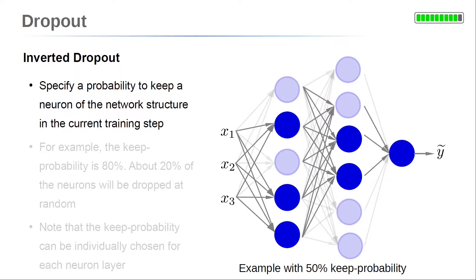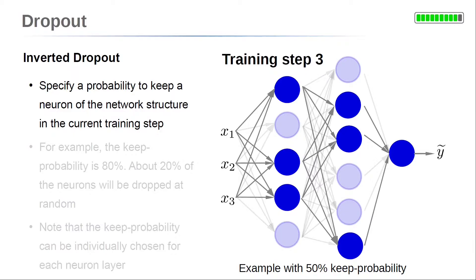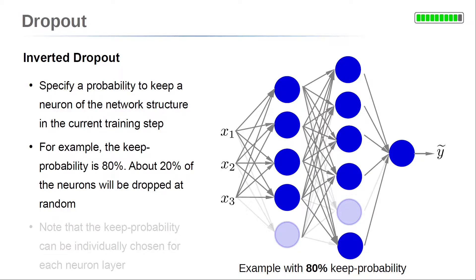The most popular implementation of the dropout technique is the inverted dropout. In this algorithm, first, a probability to keep a neuron of the neural network is specified. This so-called keep probability is the chance that a neuron is not dropped in the current training iteration step. So in each iteration step, the neurons are considered one by one, and each neuron is kept for the training step with this keep probability. For example, the keep probability is 80%.